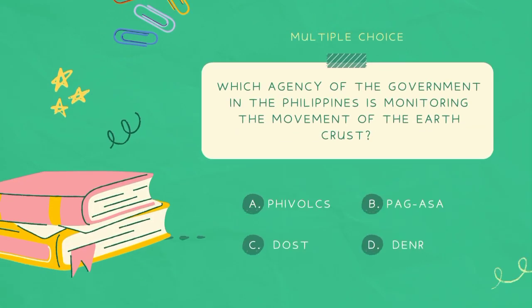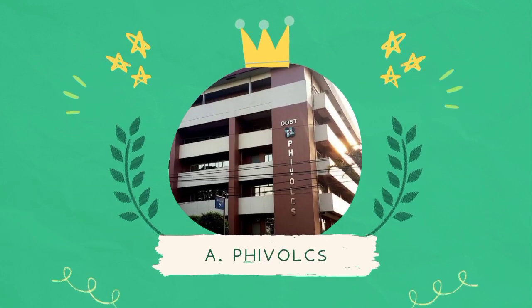Which agency of the government in the Philippines is monitoring the movement of the earth's crust? A. PHIVOLCS. B. PAGASA. C. DOST. D. DENR. The answer is A.